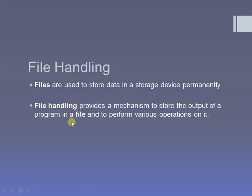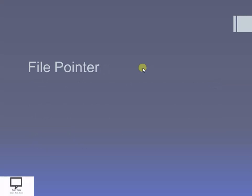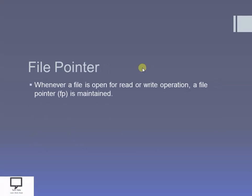A file is used to store data, so we need to perform different operations: to open a file, to create a file, to store data by writing, to access data by reading, and after performing these operations, to close the file. To perform all these operations, file handling is a mechanism which will help us. For these operations, we use different streams. Streams help us perform all the input and output operations, and with the help of a file pointer we can perform all these operations. Every time the file pointer is used to open a file, perform reading, and perform writing operations.